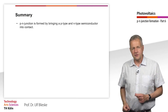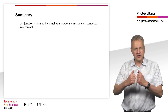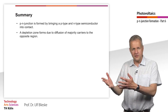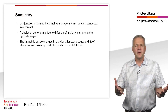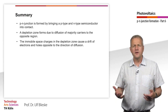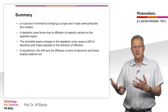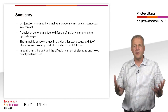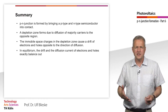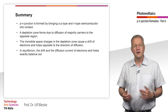What did we learn in this teaching unit? First, a P-N junction is formed by bringing a P and an N semiconductor into contact. A depletion zone is formed by diffusion of majority carriers into the opposite region. The immobile space charges of the core atoms of the dopants in the depletion zone cause electrons and holes to drift against the direction of diffusion. In equilibrium, the drift and diffusion current of electrons and holes exactly balance each other. In the next two teaching units, we will look at how the P-N junction enables a diffusion voltage, and thus the operation of a solar cell. Thank you for your attention.